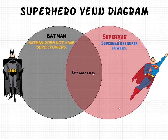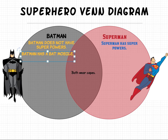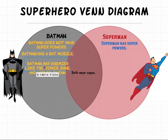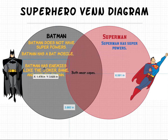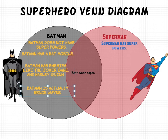Let's add some more qualities that make Batman, Batman. Batman has a Batmobile — that's something that Superman does not have, only Batman. Batman has enemies like the Joker, Bane, and Harley Quinn. Those are Batman qualities. Batman is actually Bruce Wayne — that's his secret identity.